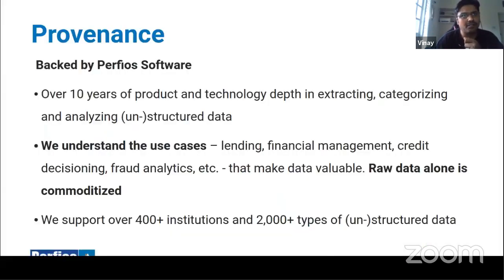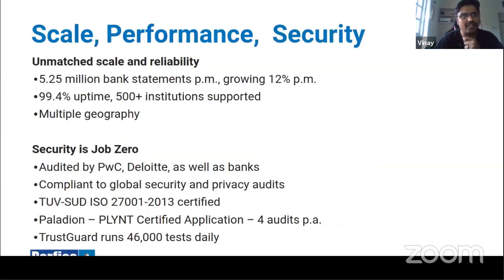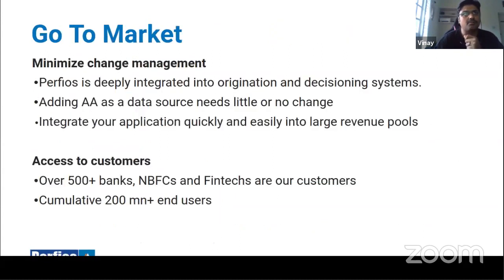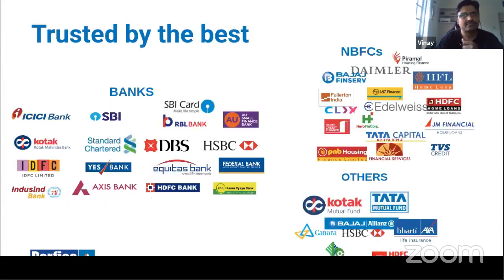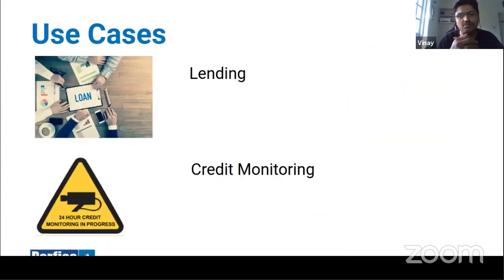At Perfios, we've been working on these use cases for 10-plus years, leveraging largely unstructured, asymmetric, heterogeneous data and making it homogeneous. What's changed now is that data becomes symmetric and homogeneous — if I get data from Kotak Bank or HDFC Bank, there's a predefined schema defined by RBI. Everyone adheres to it, so every transaction will have balance, running amount, check number, etc., in a standardized format.